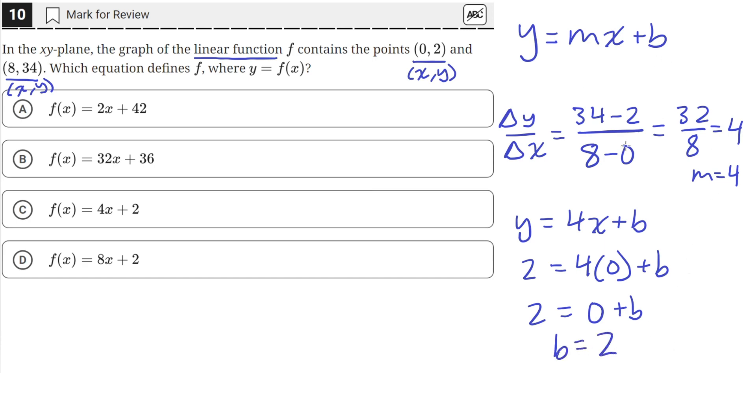Now we have everything we need to make a linear function. We'll have y equals m, which is 4, times x plus b, which is 2. This is the equation for this line that passes through these two points, which is answer choice C.